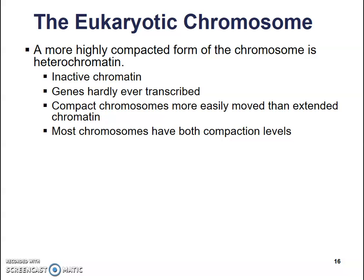It's like putting things in boxes when you move — it's a lot easier than carrying each item individually. Most chromosomes have both compaction levels, where the pieces not used often are in this heterochromatin state where they're tightly compacted and you can't get to them very easily, and they have areas that are very loosely compacted that are copied frequently.